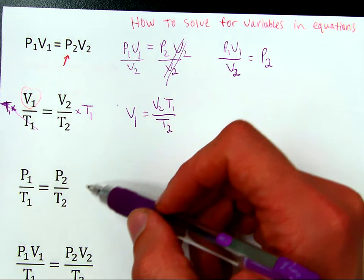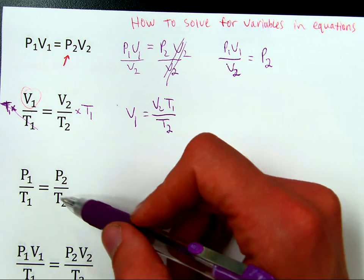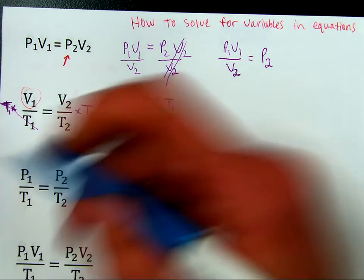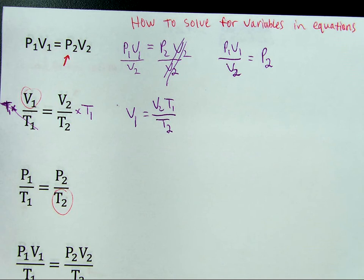More likely, if someone's going to make a mistake, oftentimes it has to do with when you're looking for one, trying to get one of these by itself. Let's say you want to find T2. All right.